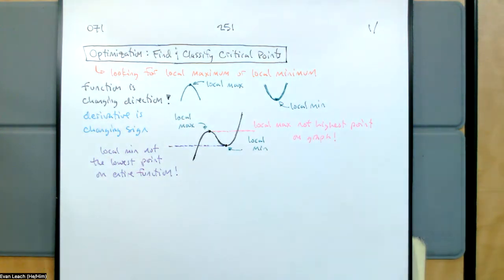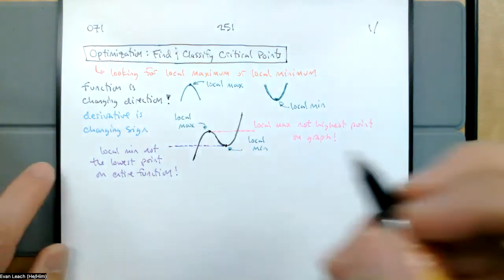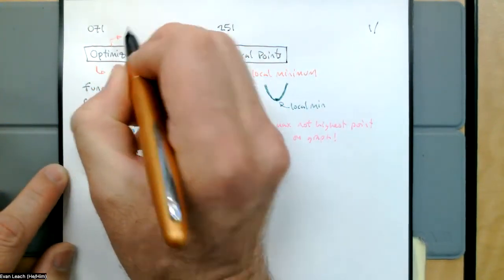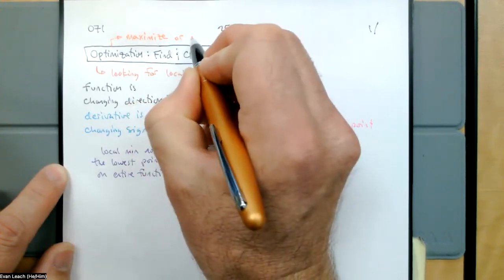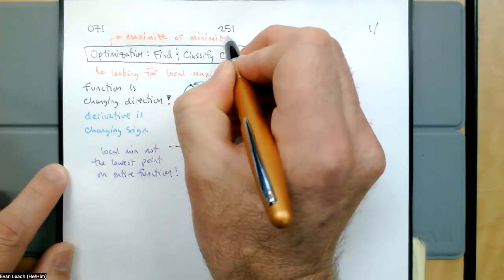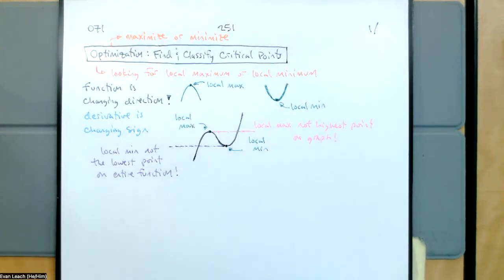We're using 'optimize' because we're trying to either maximize or minimize a function. Suppose we want to maximize our profits or minimize our costs. We'll just say 'optimize' and pick whichever one we happen to want at that given point — to maximize or to minimize. Those are the two things we might want to do, so we put them in one category called optimize.